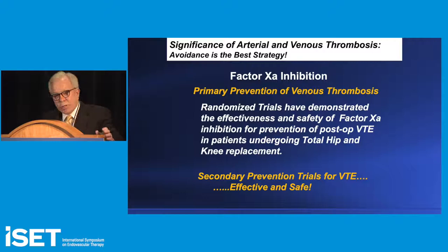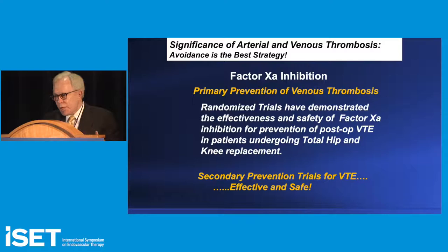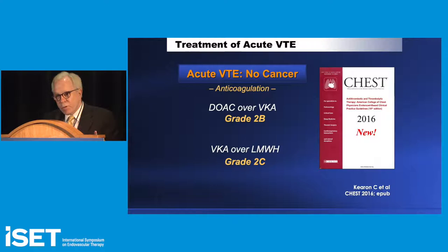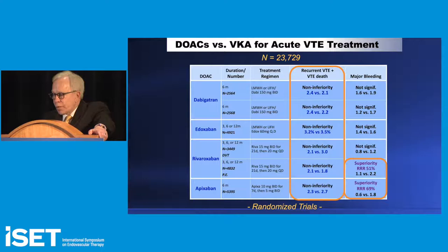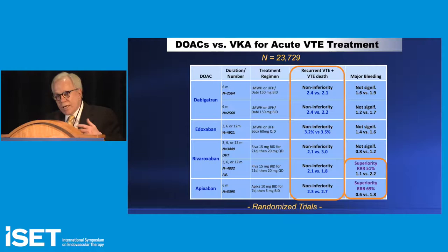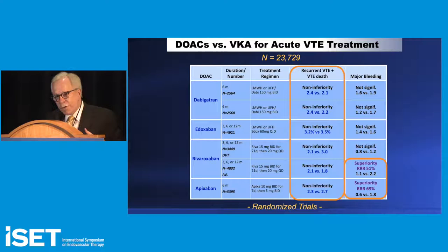10A inhibition can do primary prevention. There have also been secondary prevention trials for venous thromboembolism proving 10A inhibition was effective and safe, which led the ACCP to recommend direct oral anticoagulants in preference to vitamin K antagonists for the treatment of acute venous thromboembolism not related to cancer. The trials for secondary prevention were all non-inferiority trials — can they do as well as vitamin K antagonists and low molecular weight heparin? Each of them did.